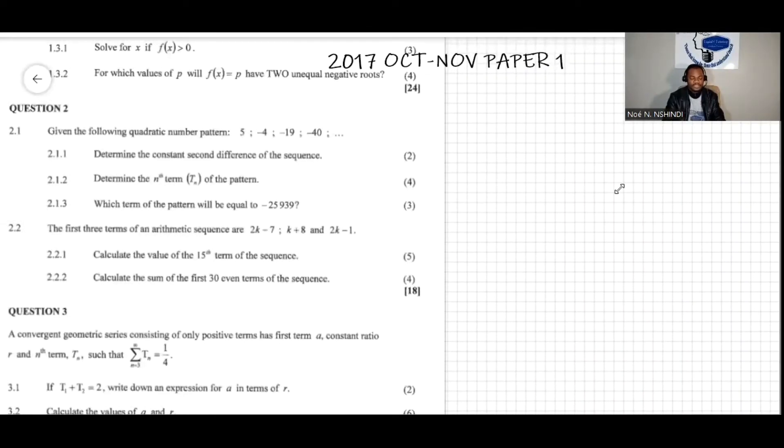We have another question here, question 2.2. The question says that the first three terms of an arithmetic sequence are 2k minus 7, k plus 8, and 2k minus 1.